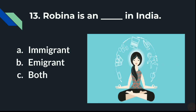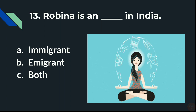Question 13: Robina, who is from Britain and came to India to work in an IT company — Robina is a Dash in India. Is she A) An immigrant in India, B) An emigrant in India, or C) Both immigrant and emigrant in India?